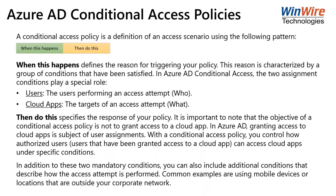A conditional access policy is a definition of an access scenario following the pattern: when something happens, then do this. The 'when' is the reason for triggering the policy — a group of conditions that are satisfied. The two mandatory assignment conditions are who's coming in (users) and what they're trying to access (a specific cloud app). Based on those conditions, you either grant the user access, block them, or require MFA. You can also have additional conditions describing how the access attempt is performed — for example, whether it's a mobile device or a location outside your organization.